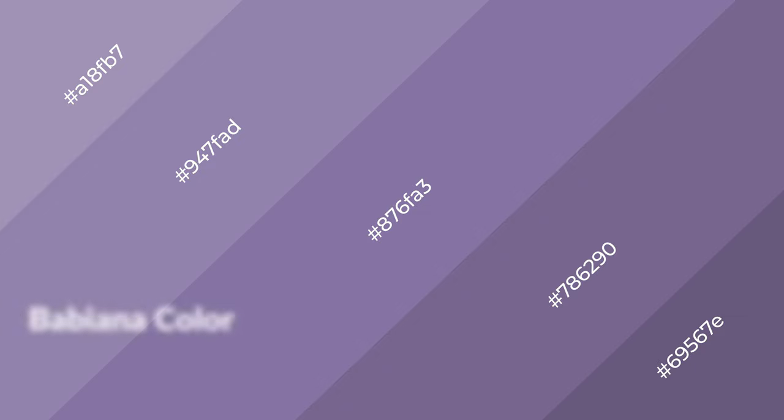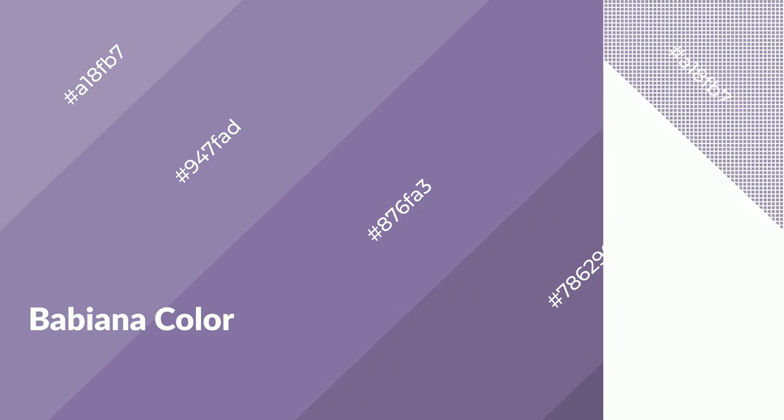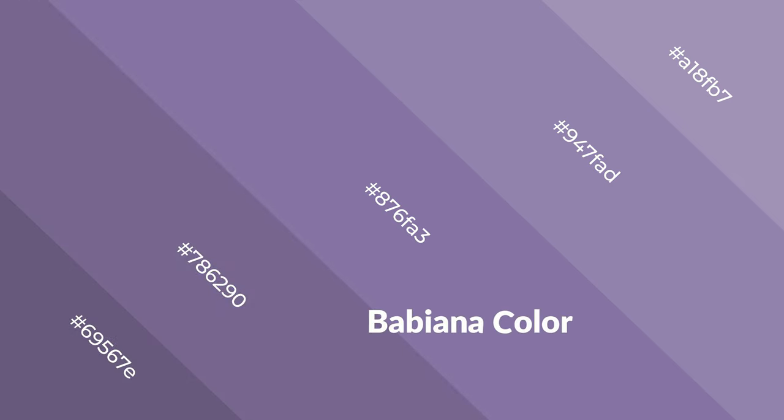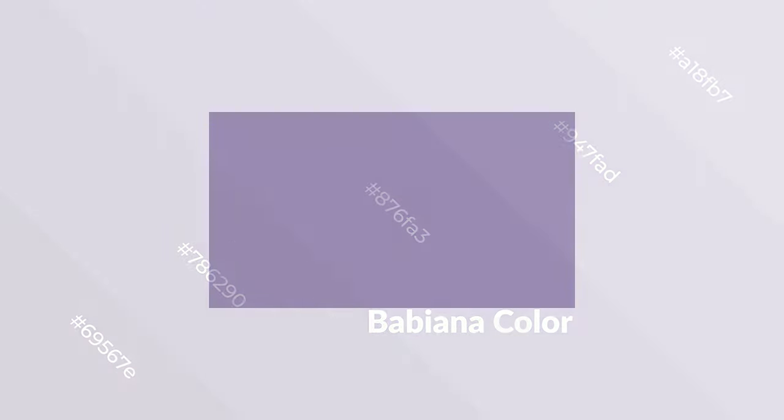Layers and shades create depth and drama. Babiana is a cool color and it emits calming, serene, soothing, refreshing, spacious, unwinding, peace, and relaxed emotions. Cool colors are like water, ice, sky, grass, soft, and snow. You can see them used in baby products.